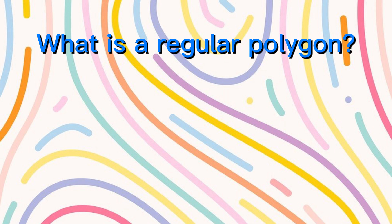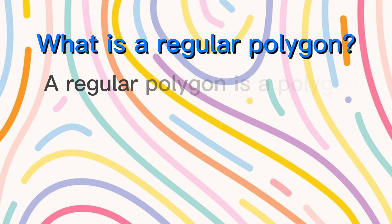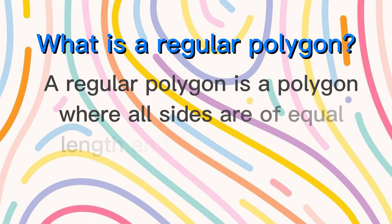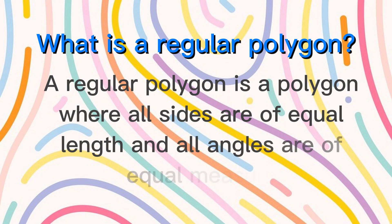What is a regular polygon? A regular polygon is a polygon where all sides are of equal length and all angles are of equal measure.